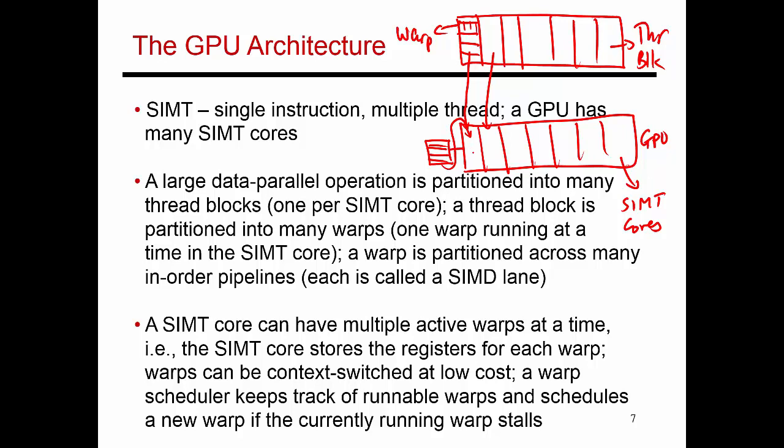Each warp itself has a lot of work that it has to do, and so that work is itself partitioned into many units. Similarly, the hardware itself is partitioned into many in-order pipelines. Each pipeline is referred to as a SIMT lane. Each component of the warp gets to execute on a separate SIMT lane. You're essentially seeing this hierarchy where a given amount of work is partitioned into thread blocks, warps, and threads within a warp.